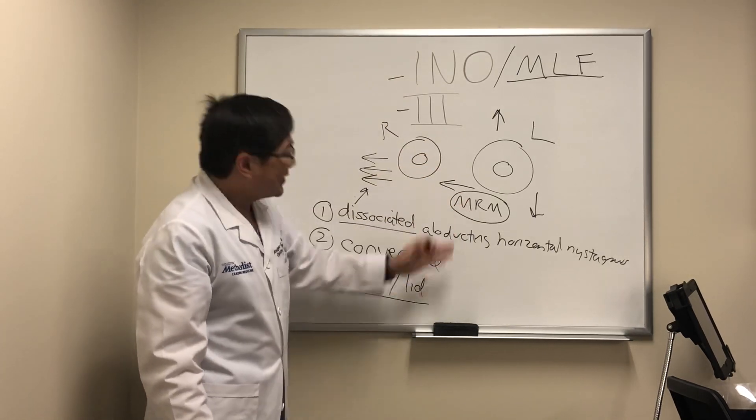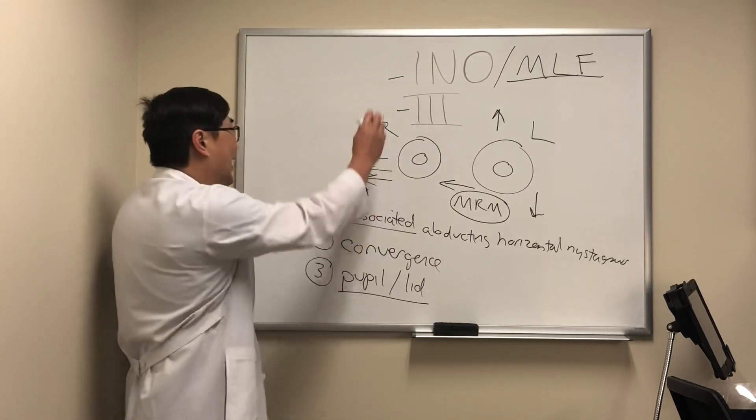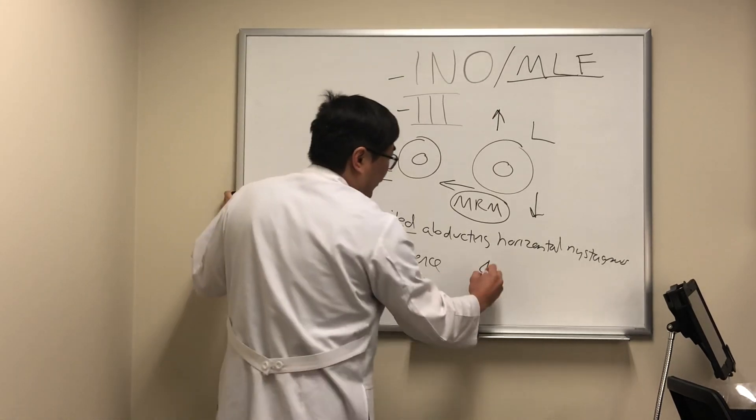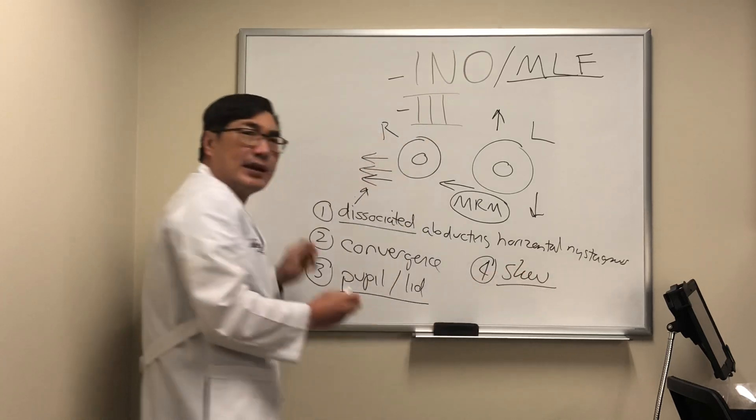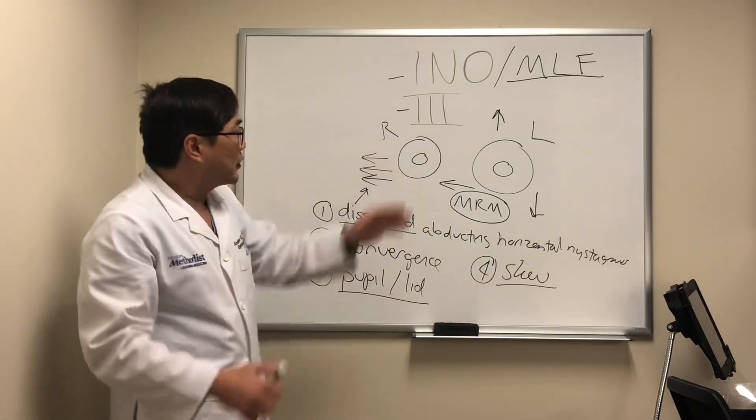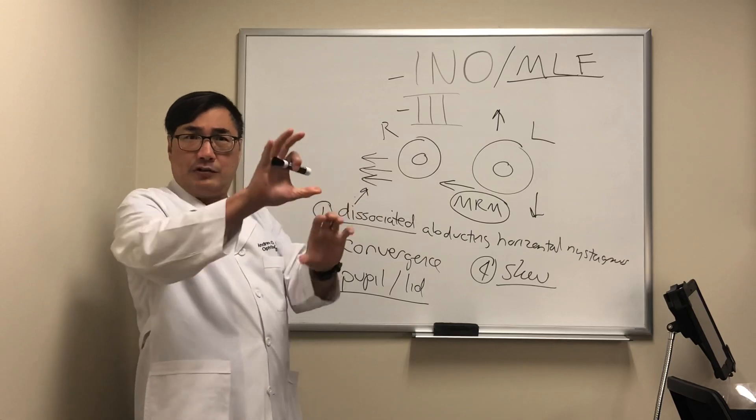Because an isolated medial rectus muscle palsy from an INO can be associated with a vertical deviation, which is called skew. And so you can have vertical problems with the INO because of the skew deviation.